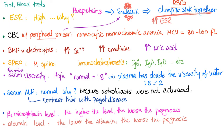Normal relative serum viscosity is approximately 1.8 — plasma has about double the viscosity of water. In multiple myeloma, plasma is very viscous because of hyperviscosity syndrome caused by the paraproteins being elevated and widespread.